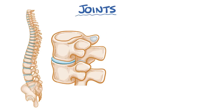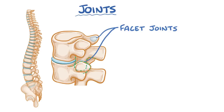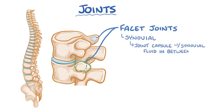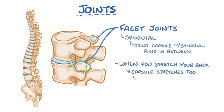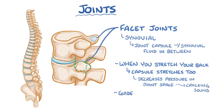In addition to the intervertebral discs, each vertebra has joints called facet joints with the vertebra above and the vertebra below, one on each side. These joints are synovial, meaning they have a joint capsule and a small amount of synovial fluid in between. When you stretch your back, the capsule in these joints stretches too, and decreases the pressure in the joint space, which makes any gas suddenly come out of solution, making a cracking sound. These help guide and limit the range of motion in your spine.